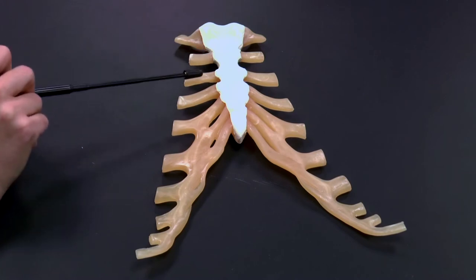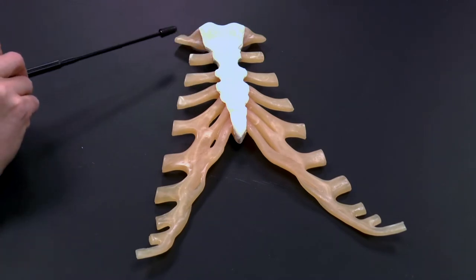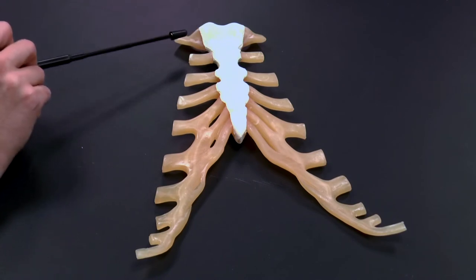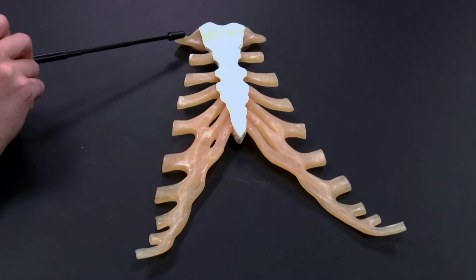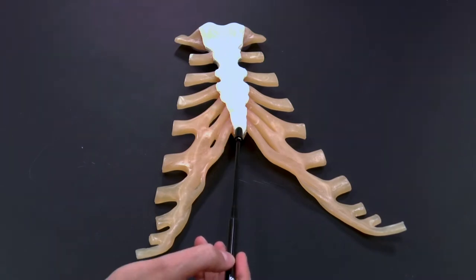These brown structures that you can see here represent what are known as the costal cartilages. These are the cartilage that attaches the rib to the sternum. You can see that the manubrium is between rib one and two, and then here you have the body and then the xiphoid process.